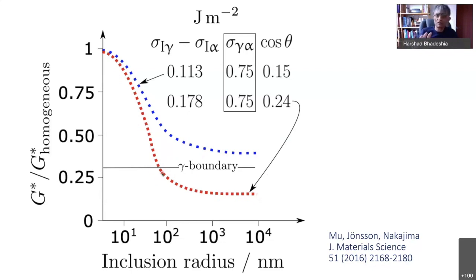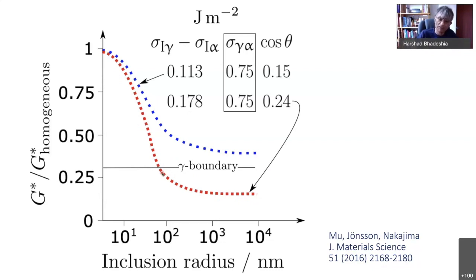So I'm going to explore what circumstances would allow an inclusion to be more effective than an austenite grain boundary. I'll show you micrographs later on in the talk.